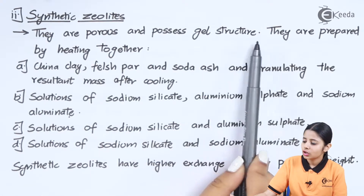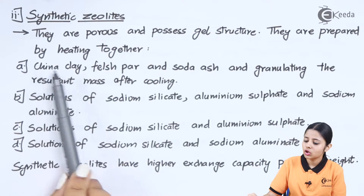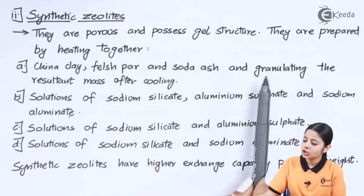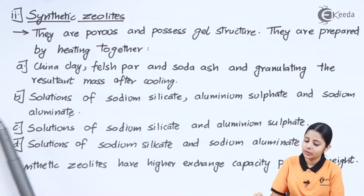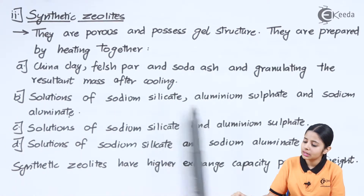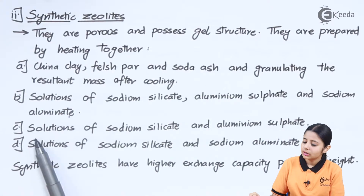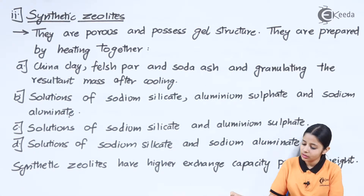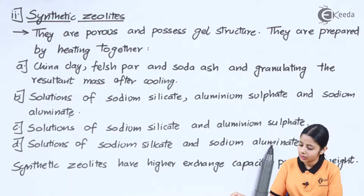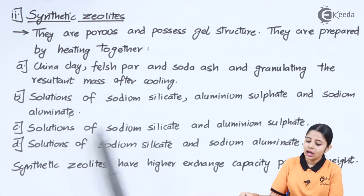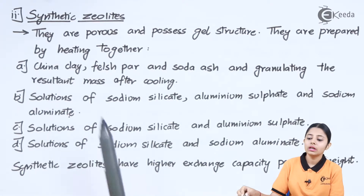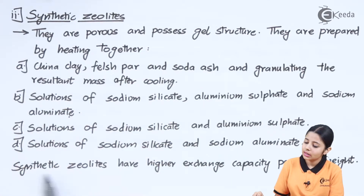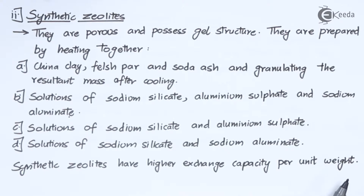Synthetic zeolites are porous and possess a gel structure. They are prepared by heating together: (A) china clay, feldspar, and soda ash and granulating the resultant mass after cooling; (B) solution of sodium silicate, aluminium sulphate, and sodium aluminate; (C) solution of sodium silicate and aluminium sulphate; and (D) solution of sodium silicate and sodium aluminate. When A, B, C, and D are mixed and granulated, we get synthetic zeolites, which have higher exchange capacity per unit weight than natural zeolites.